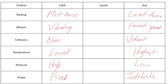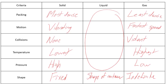Liquids take the shape of their container — molecules are relatively close together but able to flow. In general, liquids have intermediate characteristics compared to solids and gases. Their density is moderate, not as dense as a solid but not as sparse as a gas. Molecules are moving but not as fast as a gas. Collisions occur but are not as violent as in a gas. Temperature and pressure in a liquid are somewhere between a solid and a gas.